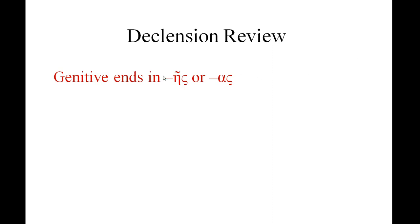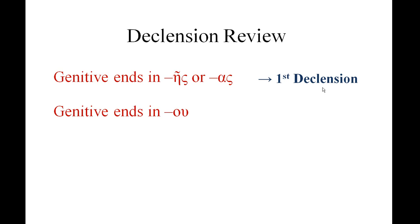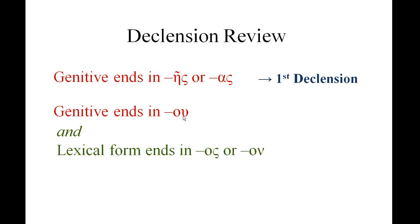It's very important when looking at any noun to determine what the declension is, and we do that by looking at the lexical entry. If that lexical entry shows a genitive ending in eta-sigma or alpha-sigma — 'es' or 'as' — then we're looking at a first declension, which is generally feminine. If our genitive ends in omicron-upsilon and the lexical form ends in omicron-sigma or omicron-nu — 'os' or 'on' — then we're looking at second declension.